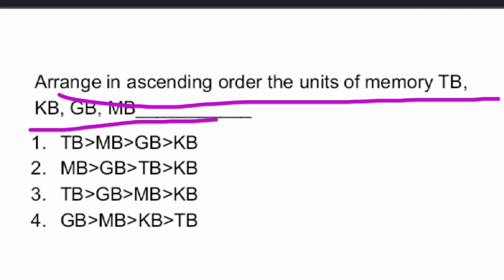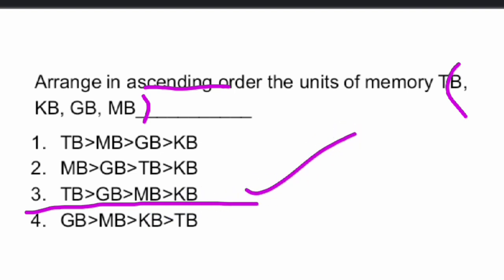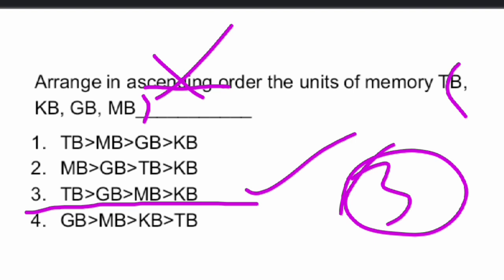Next question: arrange in ascending order the units of memory — terabyte, kilobyte, gigabyte, megabyte. We have to arrange these in ascending order. The answer, option three, is actually in descending order: terabyte, gigabyte, megabyte, and kilobyte. Option three is the right answer.